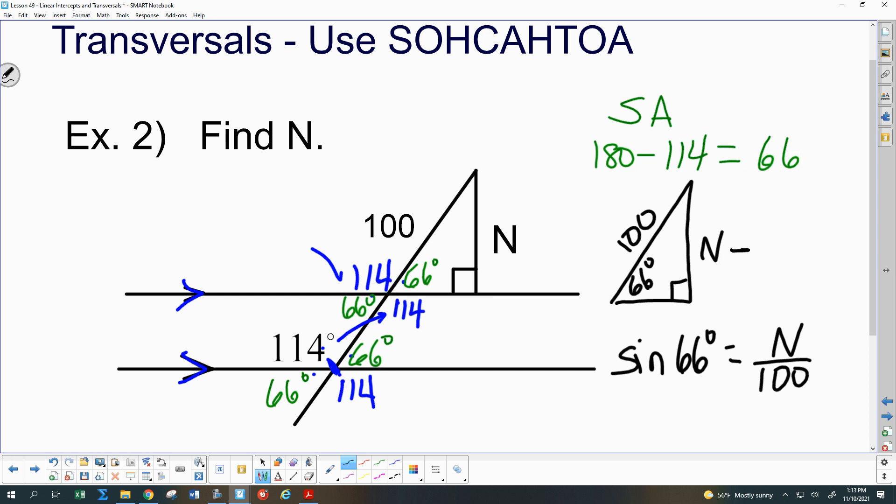N is the adjacent, hypotenuse, opposite. Everybody? Opposite, 100 is the, and O and H for opposite and hypotenuse, yes, that's sine. So are we good with that? Okay, we can't type it in the calculator like that. What are you actually going to type in the calculator? Leah? What will you actually type in the calculator to get N?